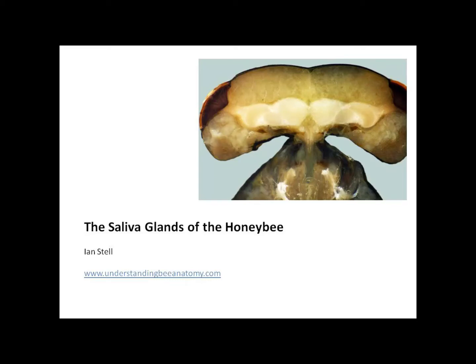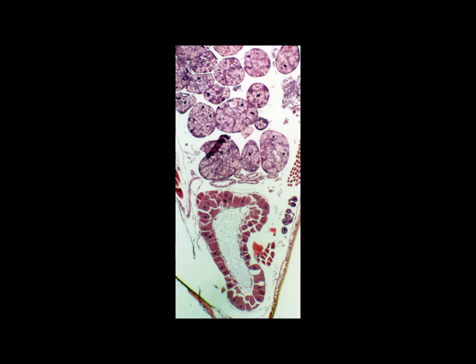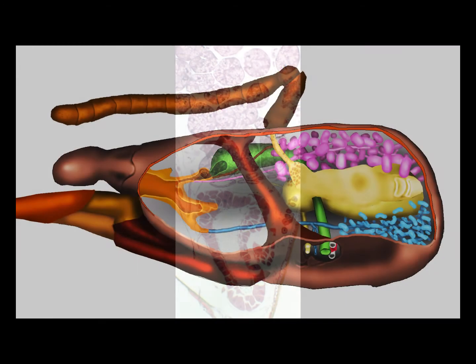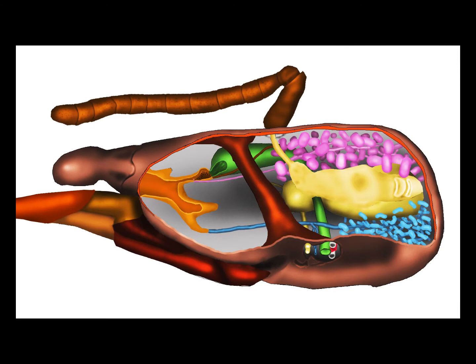The honeybee has several different glands which secrete through the mouth. The number of these glands and their rather awkward names can be confusing. I hope to make this all easier to follow through this video. To begin with, let's think about the functions of the secretory glands.